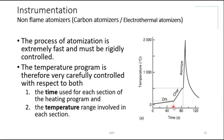Remember the sample volume is very small. About 60 seconds is enough to dry off the solvent. The next 20–25 seconds are used for charring or converting sample molecules to ash. Then in just 3 to 4 seconds, the temperature rises from approximately 500°C to almost 2000°C — this increase must be carefully controlled and rapid.